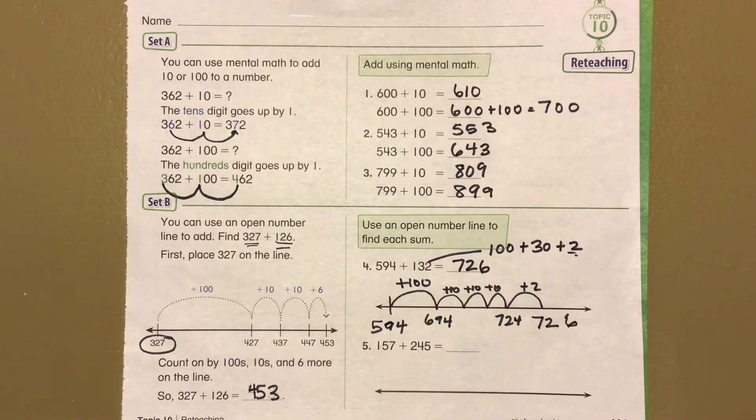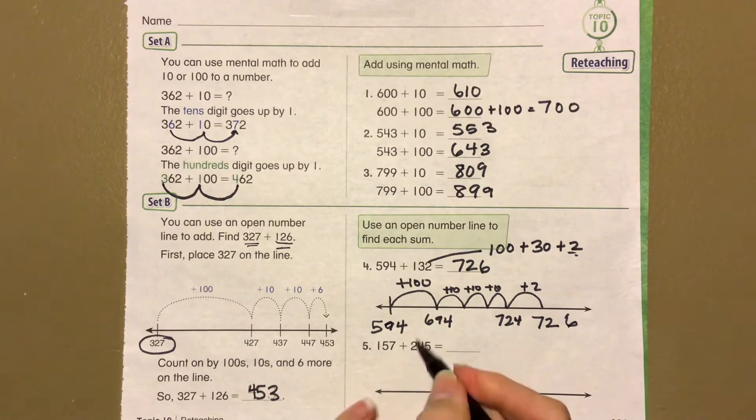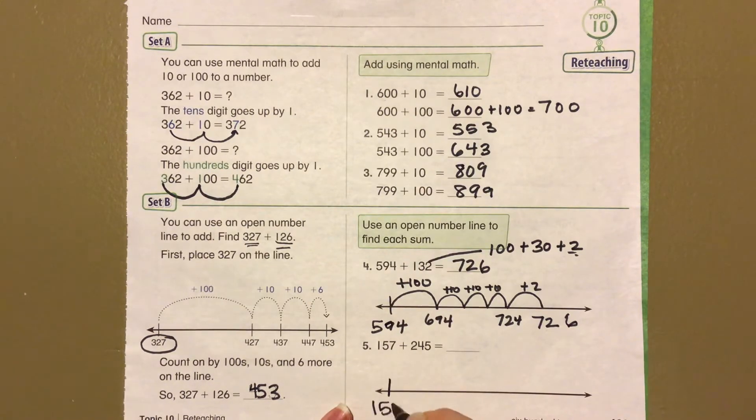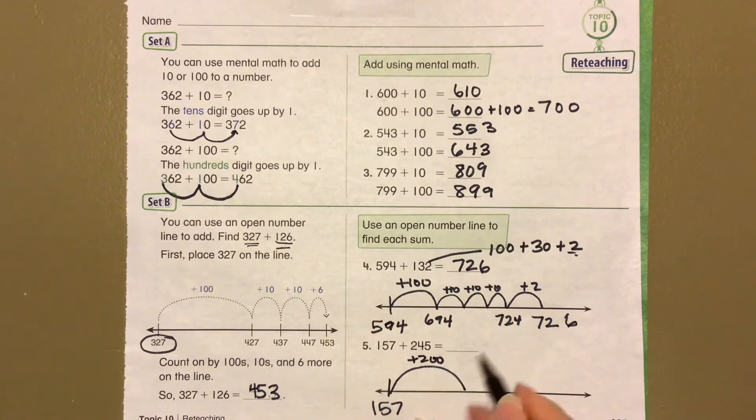Okay, let's do this again. We'll do 157 plus 245. So you start with 157. I'm going to do a giant jump of 200 first.